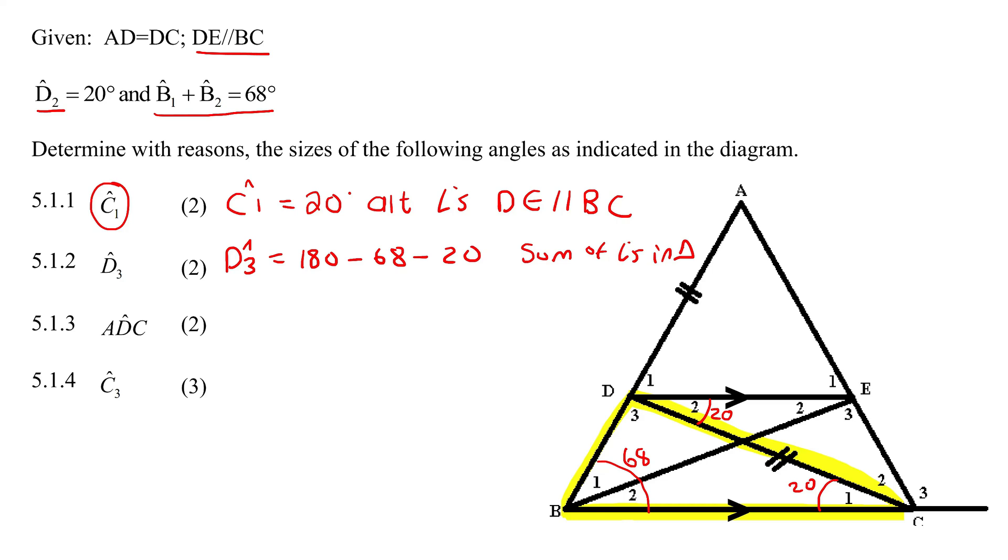Then we should go work that out, of course. So D3 is then going to be 180 minus 68 minus 20, and that's going to be 92 degrees. So we have that then as 92.